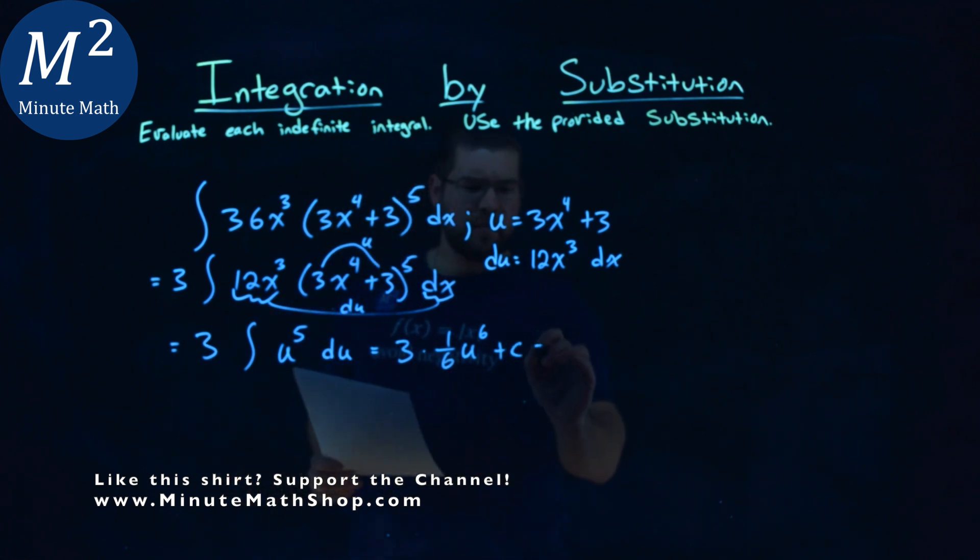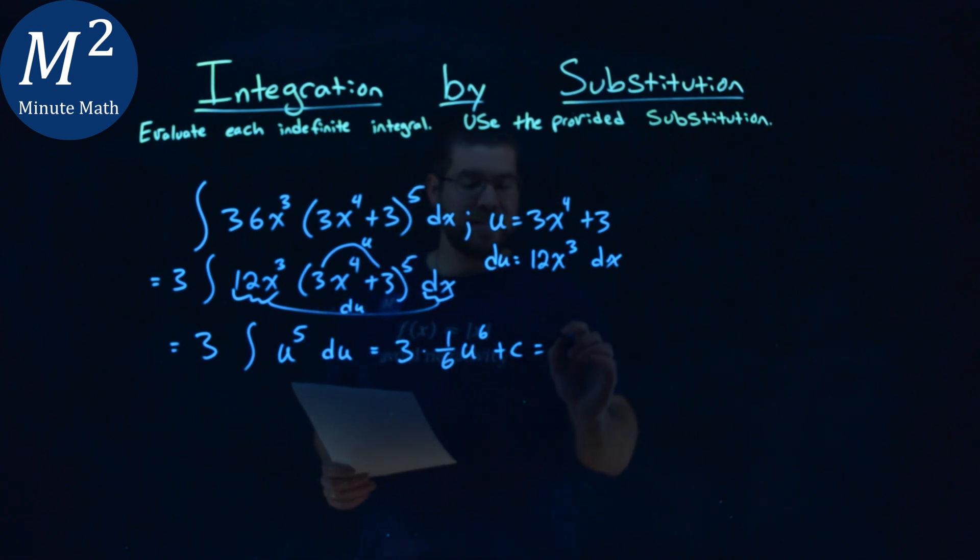From there, let's go simplify it again. I'm just kind of going over from left to right here. 3 over 6 is 1/2 u to the 6th power plus c.